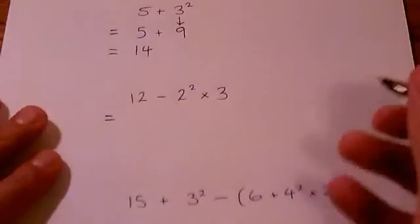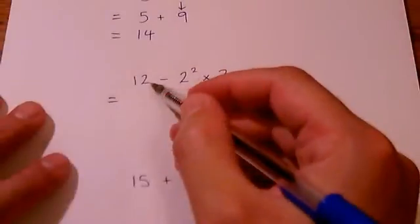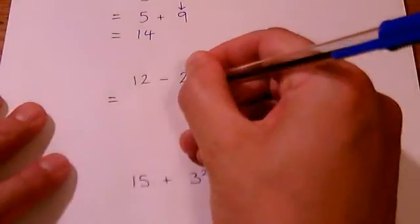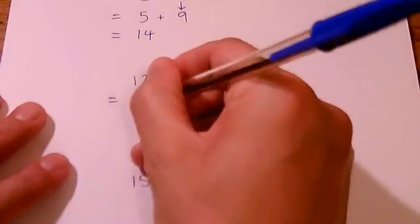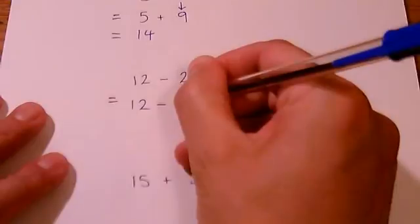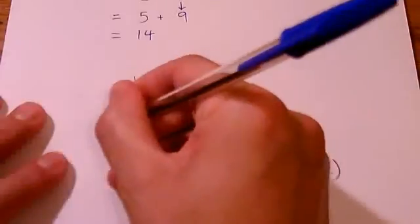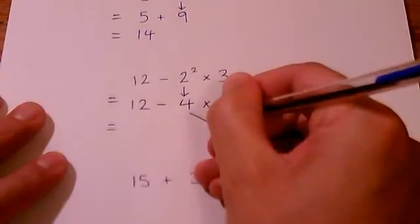So, next example down. Again, we've got a subtraction, we've got a multiplication. But we notice that we've got powers to do first. So, keep everything the same. But 2 squared, 2 times 2 is 4. Then, you can bring those together.